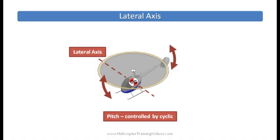The final axis to look at is the lateral axis. This horizontal axis runs from left to right or right to left through the helicopter through the center of gravity. Along this axis we pitch the helicopter forward and backwards or up and down, depending on how you would look at it. That pitch control is again controlled by the cyclic.